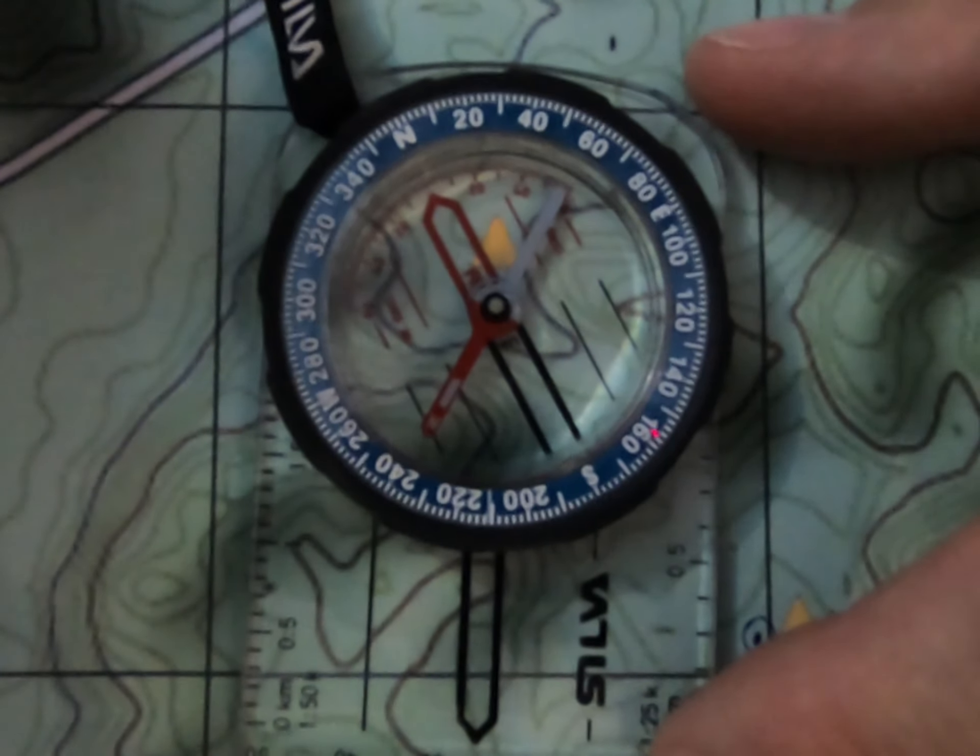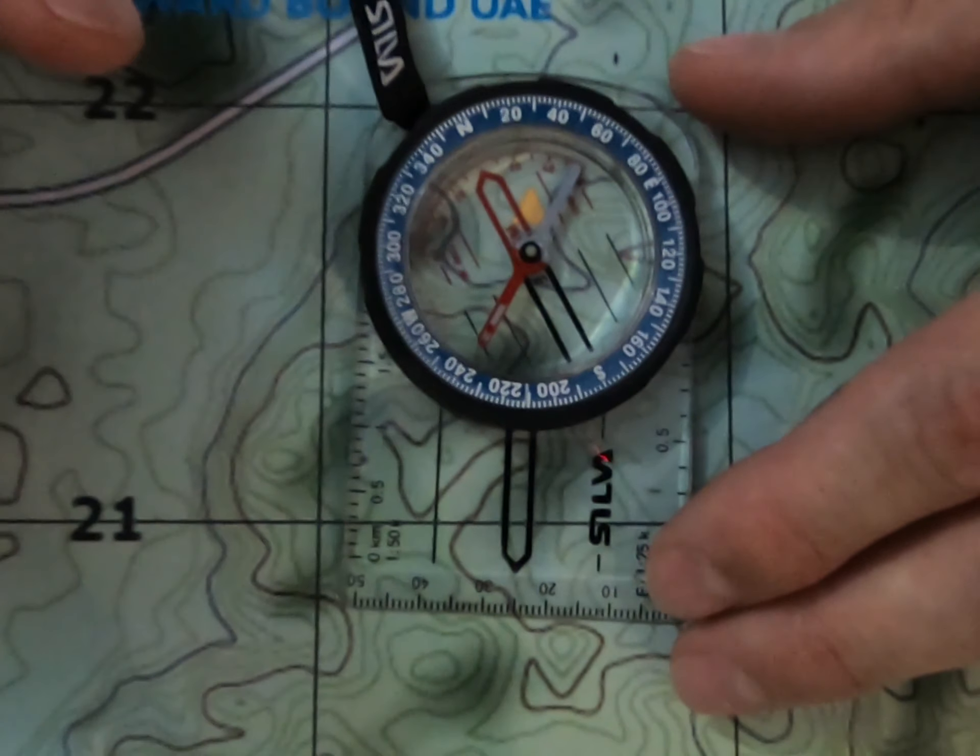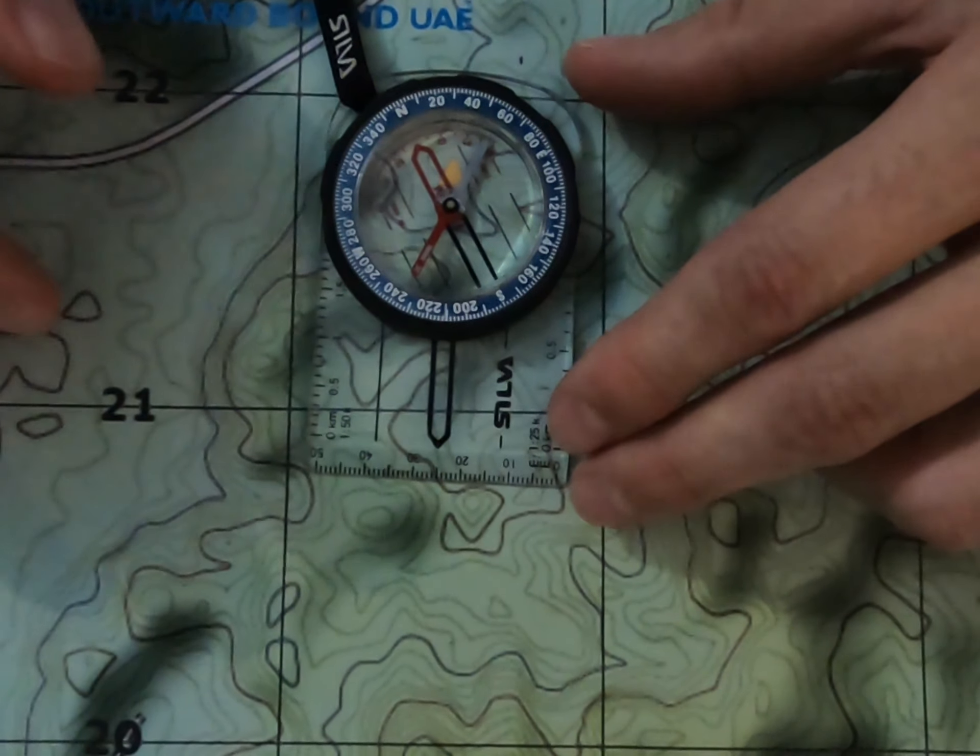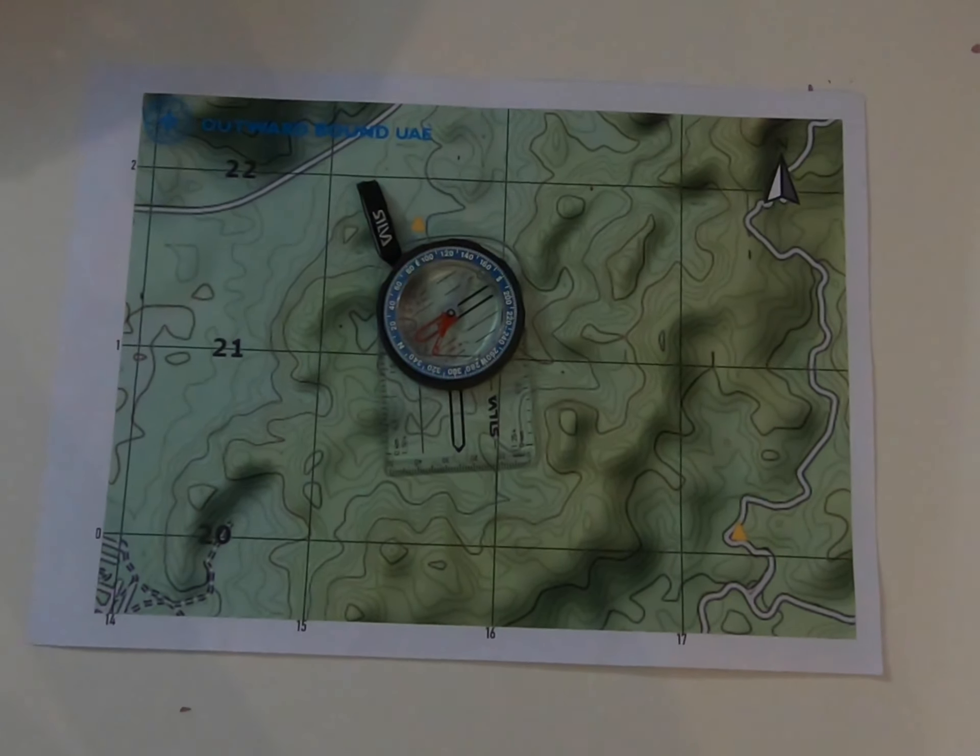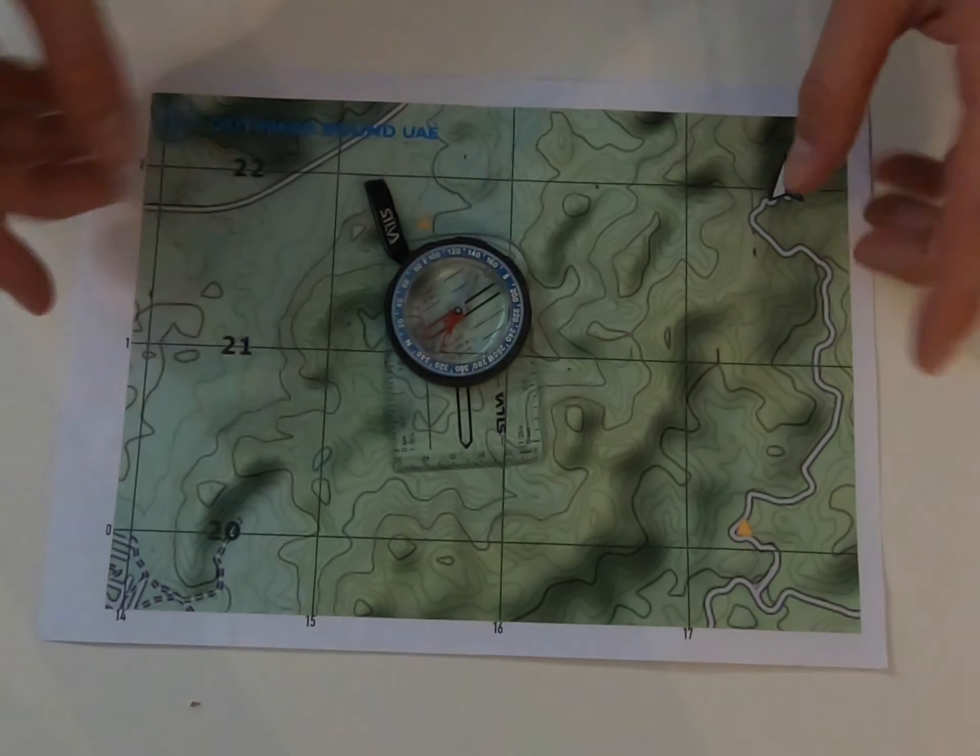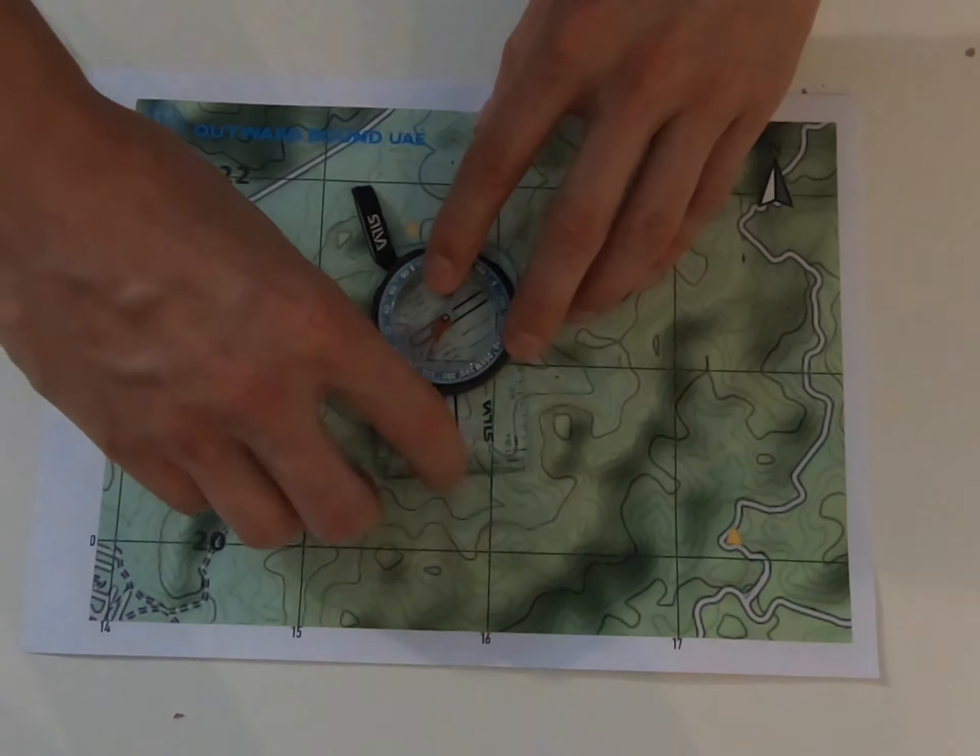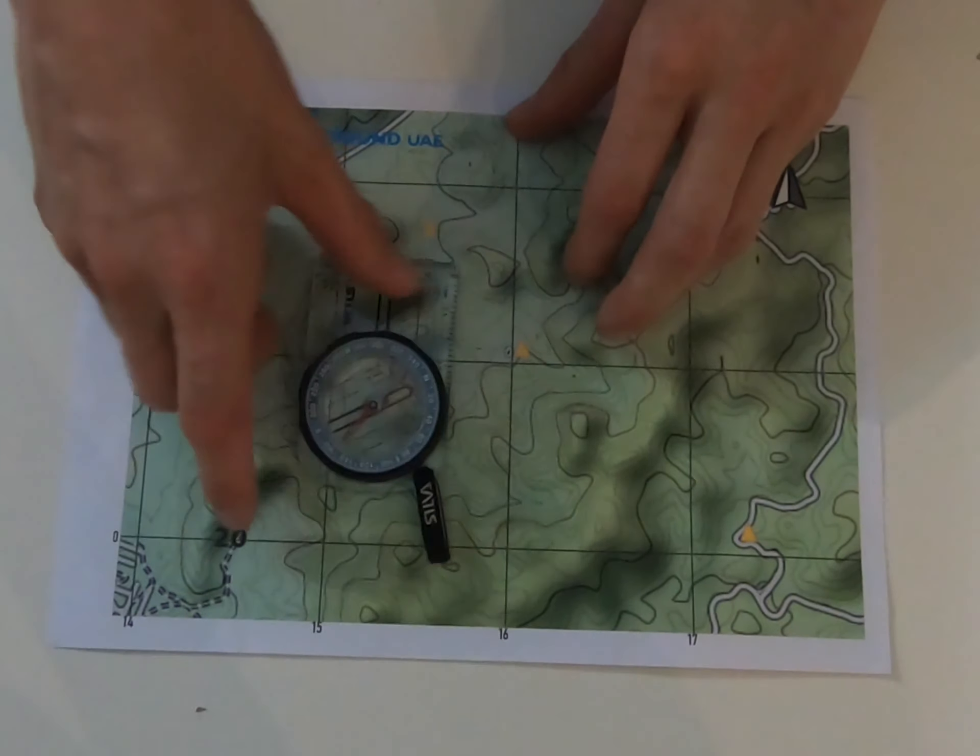So let's have a look at a real simple thing that we can do with our compass, and that is using our compass to orientate our map. So orientating our map. First thing we need to do, we need to take our compass and line our directional arrow up with the top of our map.